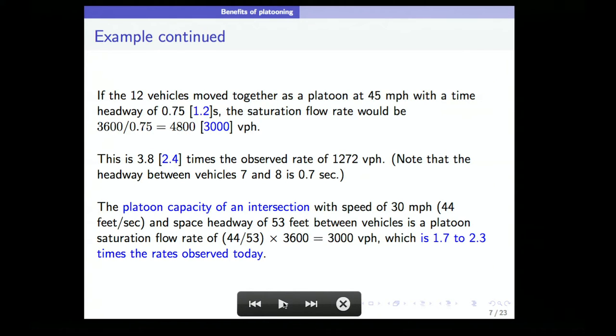If the twelve vehicles moved together as a platoon at 45 miles per hour with a time headway of 0.75 seconds, the saturation flow rate would be 4,800 vehicles per hour instead of 1,272. You might say 0.75 is too aggressive, so let's make it 1.2 seconds, in which case the saturation flow rate would be 3,000 vehicles per hour, which is still 2.5 times what you observe. Note that the headway between vehicles 7 and 8 was already 0.7 seconds.